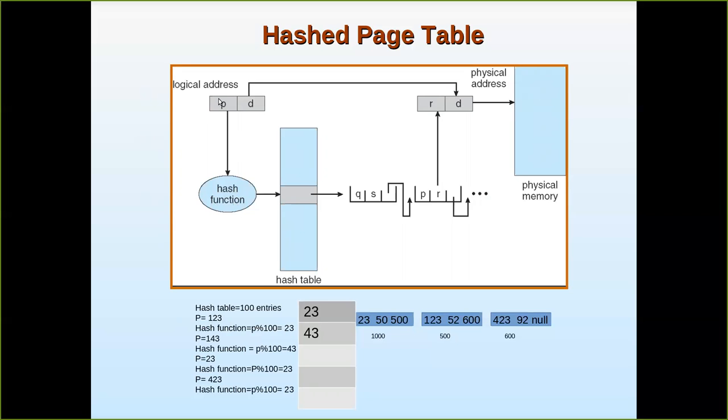Let us take the 23 index. This is connected to a linked list where the linked list consists of three portions. The first portion is the actual page number from the logical address, not from the hash function. The next field will be the frame. And then the next field will be the pointer that points to the next linked list node. For example, when you do 123 you get 23. You form a linked list where the first field will be the page number. If it is 23, it is actually present in frame number 50.